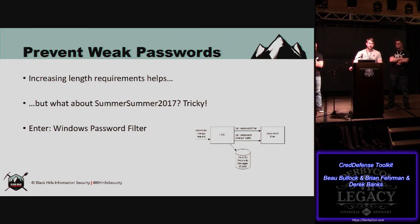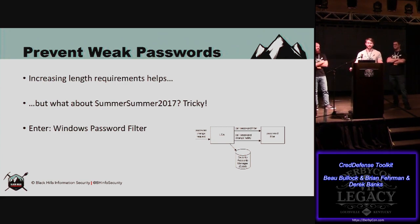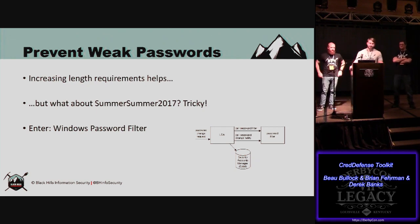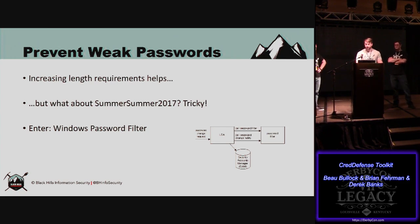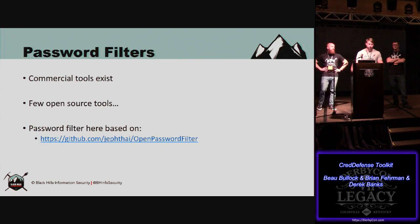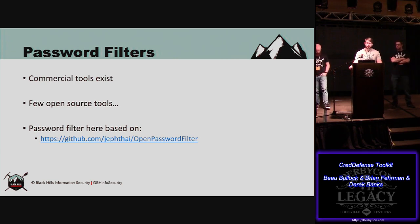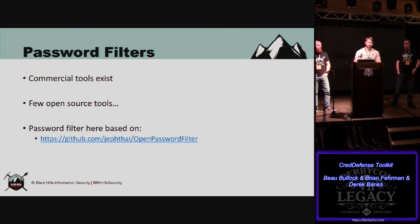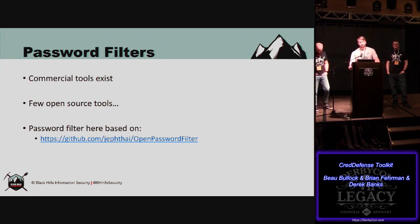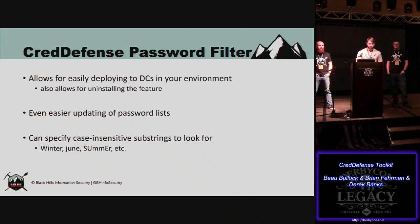But what about users doing things like just doubling down — like, Summer2017 doesn't work? How about Summer Summer 2017 with an exclamation point? There's a Windows password filter tool. There are commercial tools and open source tools. What this work is based off of is the Open Password Filter project — an adaptation of that. We wanted something easier to deploy, configure, update, and manage. You can quickly and easily deploy this to all the domain controllers in your environment. A password filter needs to be installed on all domain controllers running the Active Directory role.